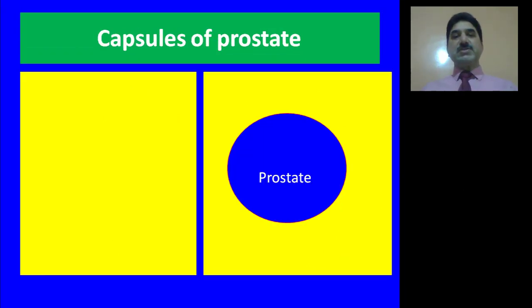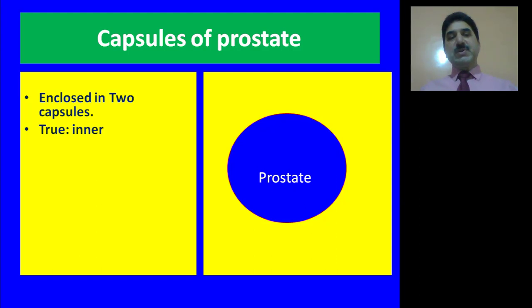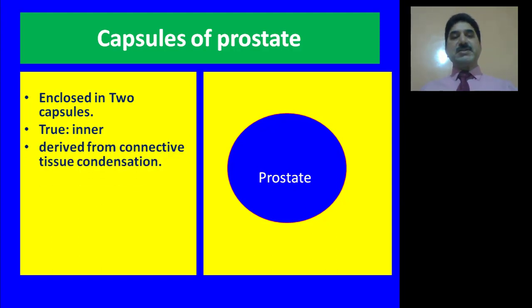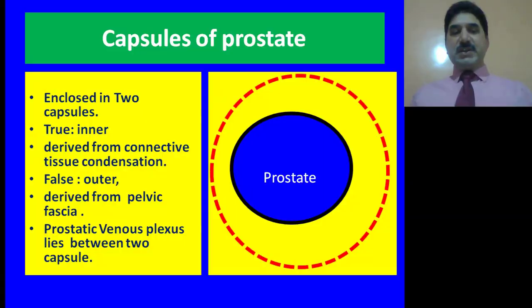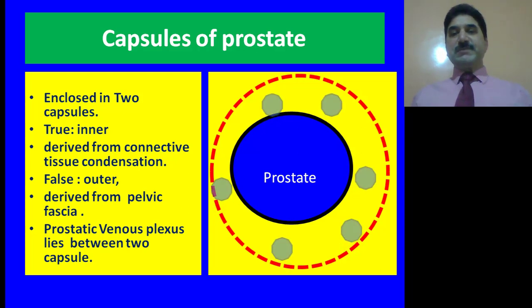Like the thyroid, the prostate is also enclosed in two capsules. The true capsule is also called the inner capsule of the prostate, and is derived from condensation of the connective tissue. The false capsule is also called the outer capsule, and is derived from the pelvic fascia. In contrast to the thyroid gland, the prostatic venous plexuses lie between the two capsules.